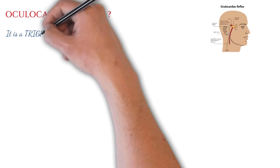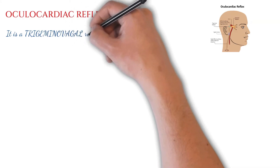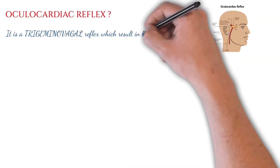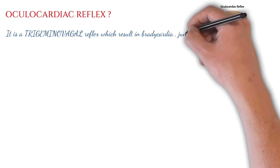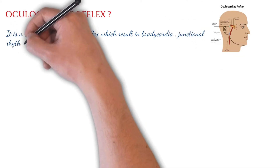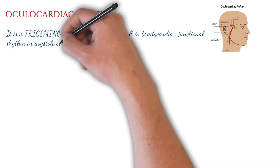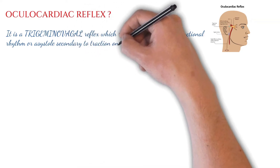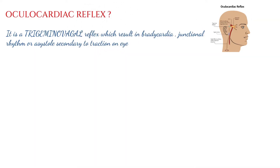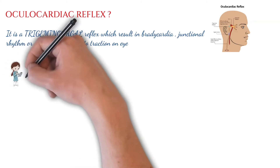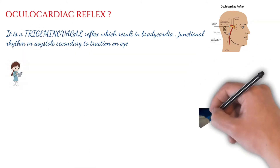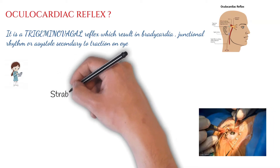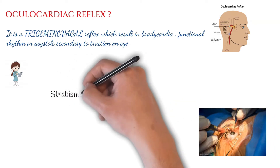So what is the oculocardiac reflex? It is a trigemino-vagal reflex which results in bradycardia, junctional rhythm, or asystole secondary to traction on the eye. Whenever there is traction on the eye, the trigemino-vagal reflex is activated, which can result in bradycardia, junctional rhythm, or asystole.